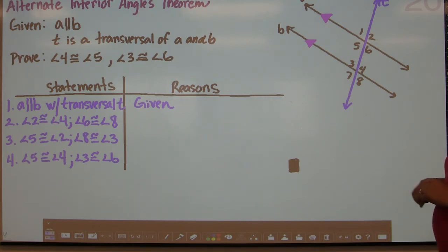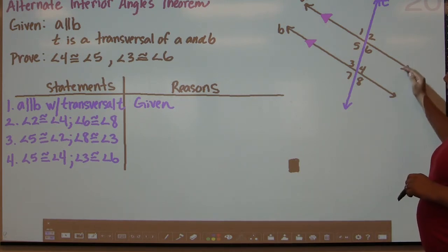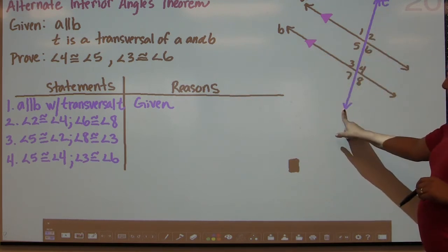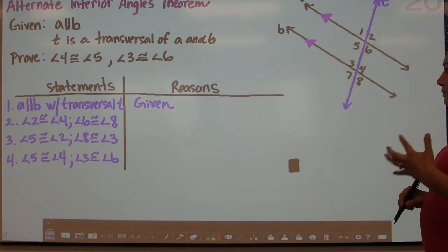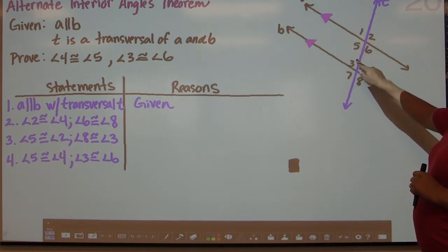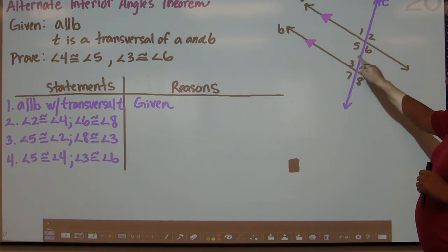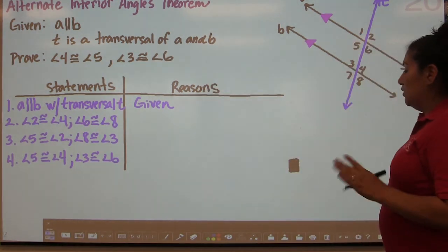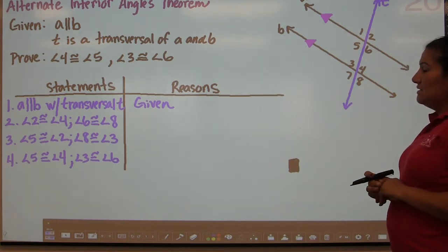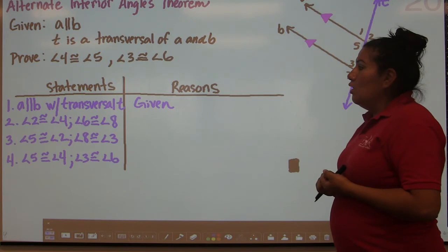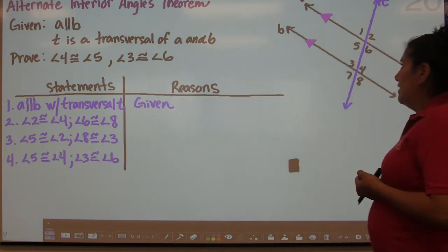I'm going to try to prove that angle 4 and angle 5, which are alternate interior angles, and angle 3 and angle 6, which are also alternate interior angles, are congruent. In Step 1, we start with our given: A is parallel to B with transversal T.